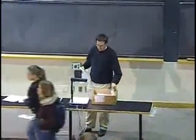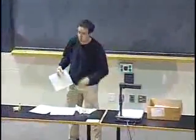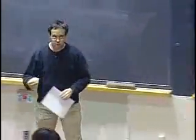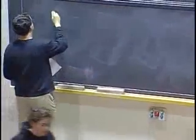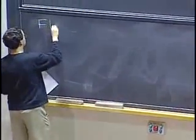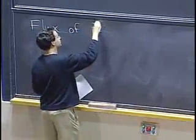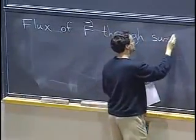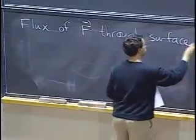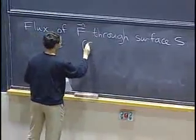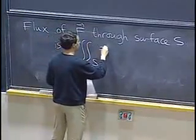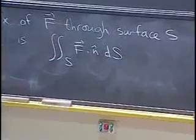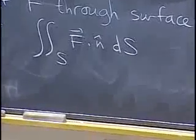Yesterday we learned about flux, and we saw the first few examples of how to set up and compute integrals for flux of a vector field through a surface. The flux of a vector field F through a surface S is defined by taking the double integral on the surface of F dot n dS, where n is the unit normal to the surface and dS is the area element on the surface.